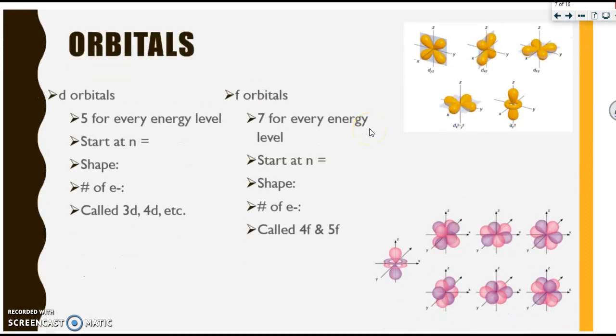The next type of orbital is a D orbital. There are five within every energy level. They start at energy level three. They don't really have a shape per se. But since there are five of them, five times two, because that's how many electrons can go in each one, D can hold a maximum of 10 electrons. And again, they're the 3D, the 4D, so on and so forth. And you can see them over here.